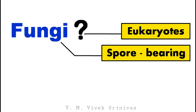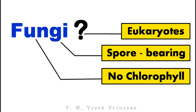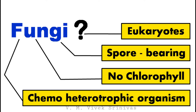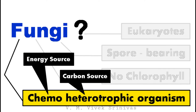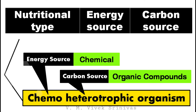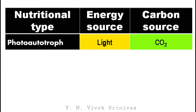Fungus is a eukaryotic, spore-bearing or spore-producing organism which lacks chlorophyll, so it cannot make its own organic food. Fungi are chemoheterotrophic organisms — they use chemical as a source of energy and organic compounds as a source of carbon. Based on nutritional type, organisms can be photoautotroph (light as energy source, CO₂ as carbon source) or photoheterotroph (light as energy source, organic compounds as carbon source) or chemoautotroph (chemical as energy source, CO₂ as carbon source).